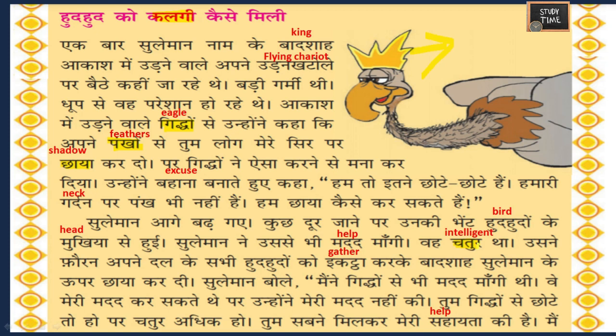Sulayman said, 'Maine giddon se bhi madad mangi thi' - I asked help from the eagles too. They could have helped me but they did not. But you are smaller than the eagles yet you were more intelligent - you gathered all your birds together and helped me.